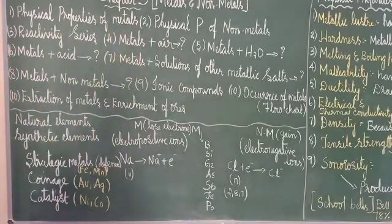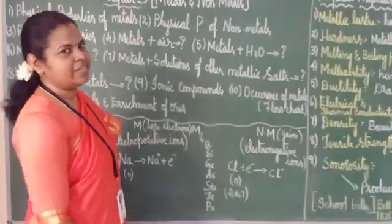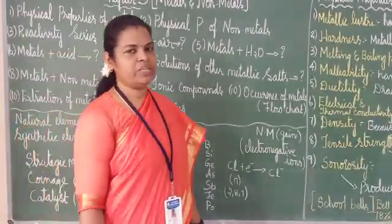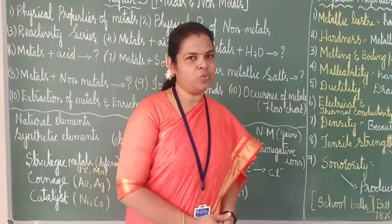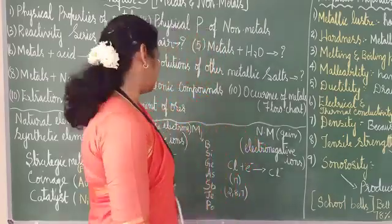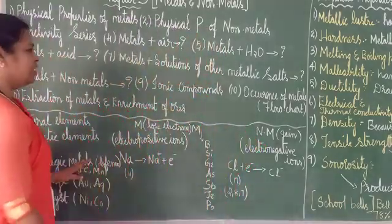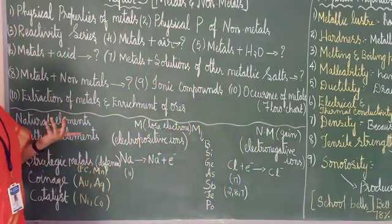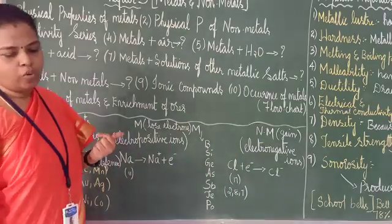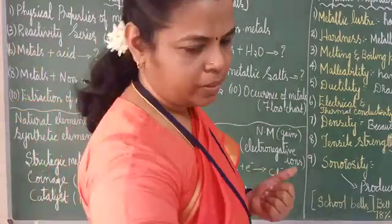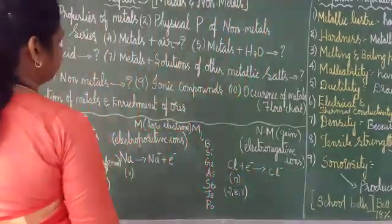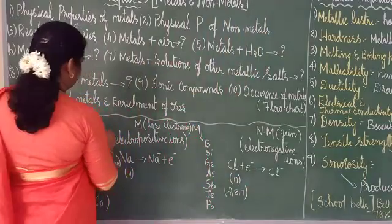You have already studied the metals chapter and I have also given a small introduction in today's lesson. Now, how many elements are there in the periodic table? 118 elements are there.